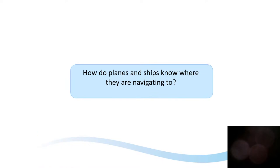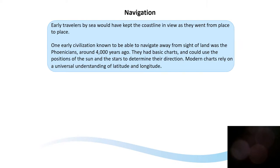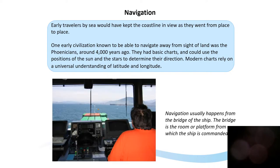How do planes and ships know where they're navigating to? The earliest travellers by sea would have always kept the coastline in view as they went from place to place. The earliest civilisation known to be able to navigate away from the sight of land were the Phoenicians, 4,000 years ago. They had some basic charts and they could use the positions of the sun and the stars to determine their direction. Modern charts now rely on our understanding of latitude and longitude. From the bridge of ships, this is where the captain commands the vessel and decides which direction to go in and how to steer.